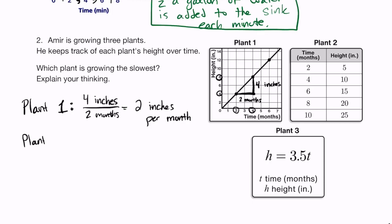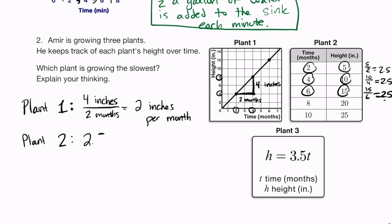For plant 2, we find the rate of change the same way. For a proportional relationship, you can divide the y-coordinate by the x-coordinate. We can do 5 divided by 2, 10 divided by 4, or 15 divided by 6 — all equal 2.5. So the rate of change is 2.5, meaning plant 2 is growing 2.5 inches per month.